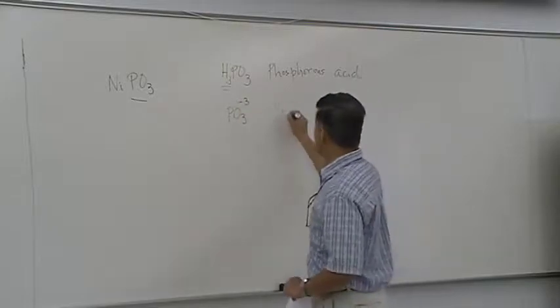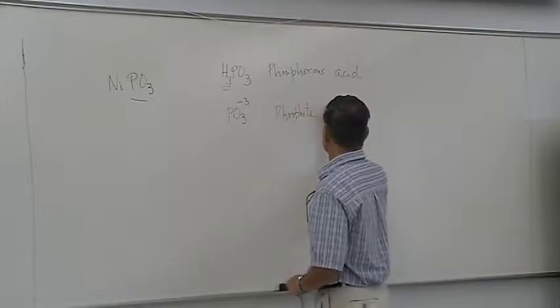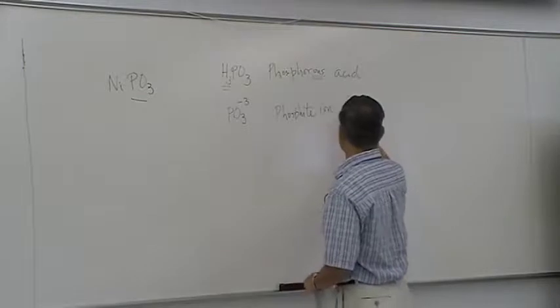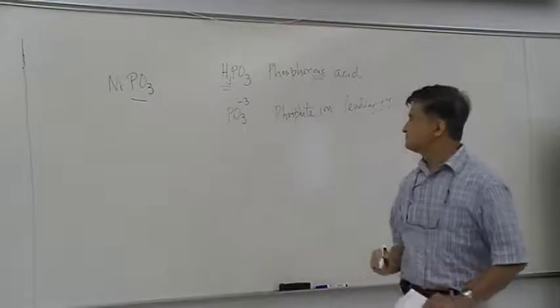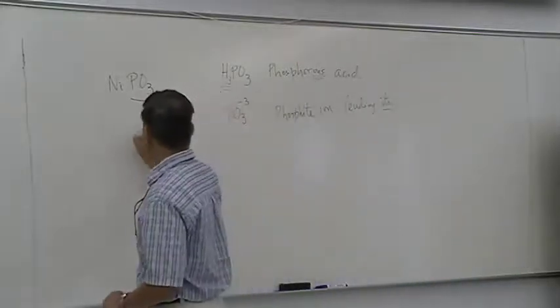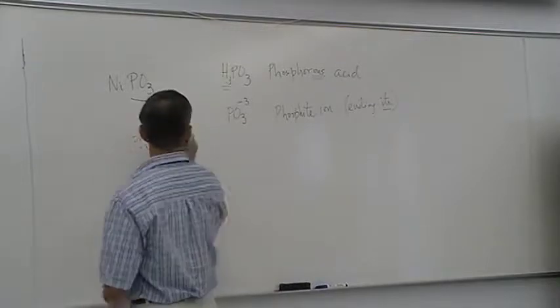This is called phosphite ion. So anything that comes from OUS acid would have ending ITE. So PO3, first thing I know that, has negative number, which is negative three.